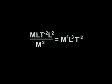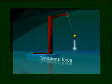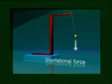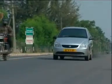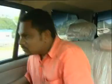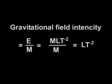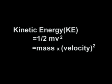Momentum (inertia): p = m·v = M¹·L⁰·T⁰ × M⁰·L·T⁻¹ = M¹·L¹·T⁻¹. Gravitational field intensity = F/m = M·L·T⁻²/M = L·T⁻².